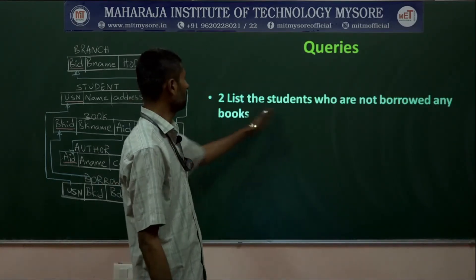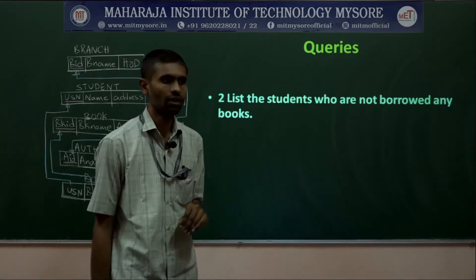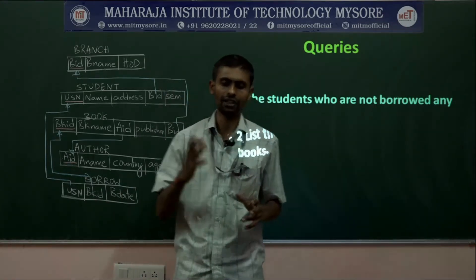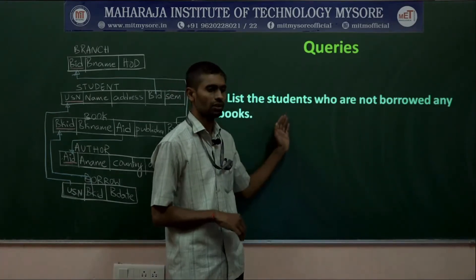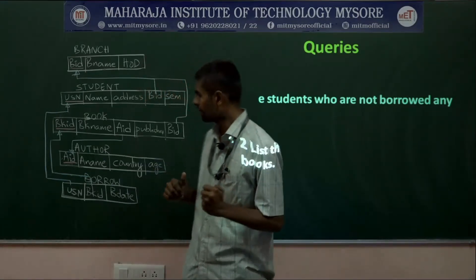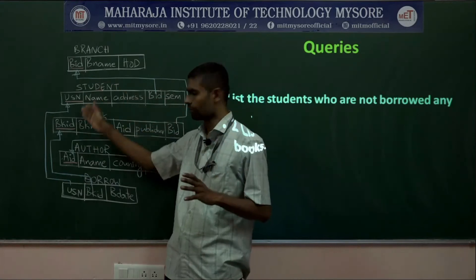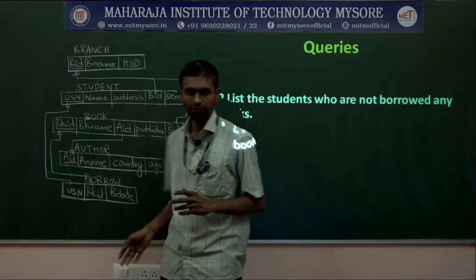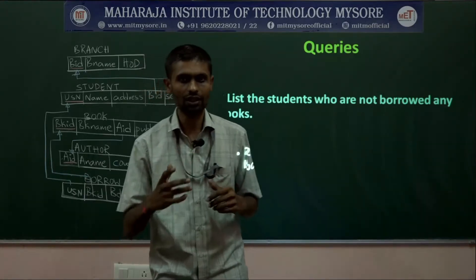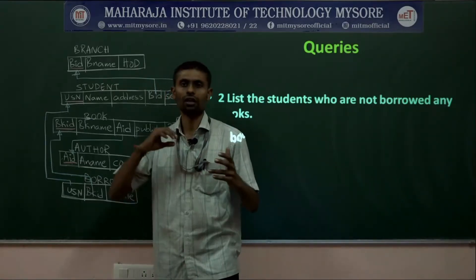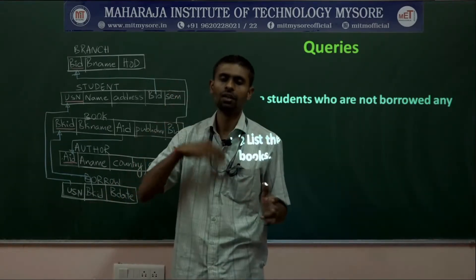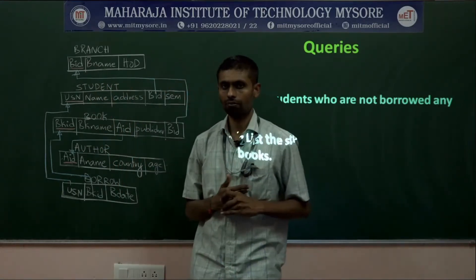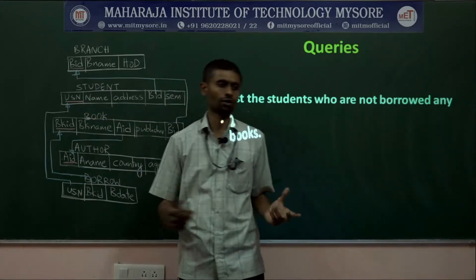The second query was: students who have not borrowed any books. The logic is that USNs present in the borrow table have definitely borrowed at least one book. We want the opposite — students whose USN is in the student table but not in the borrow table. We solved this using a nested query: SELECT * FROM student WHERE USN NOT IN (SELECT USN FROM borrow).